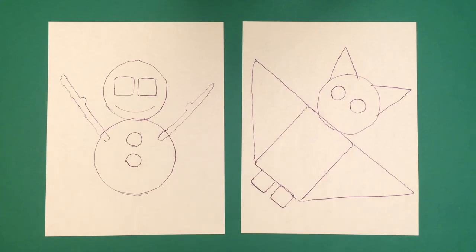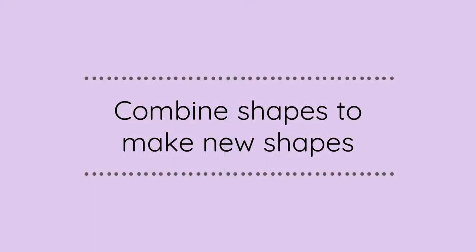By combining and tracing objects, a child starts to understand that they can combine shapes to make new shapes.